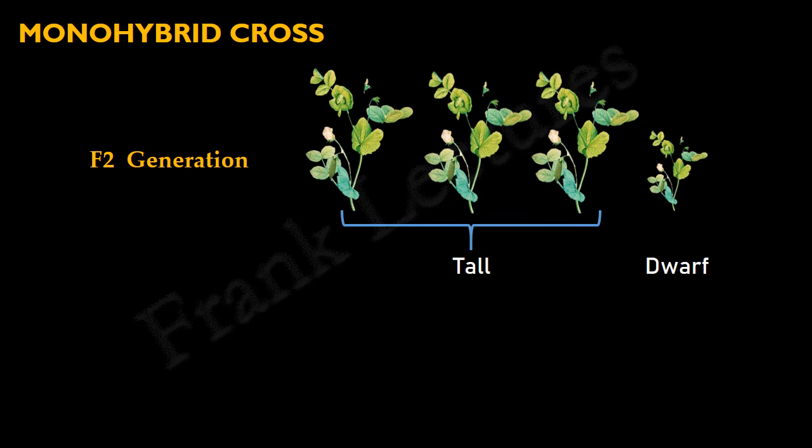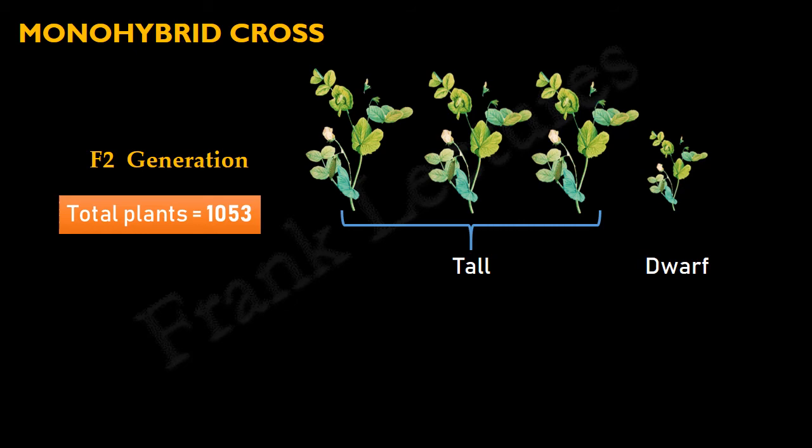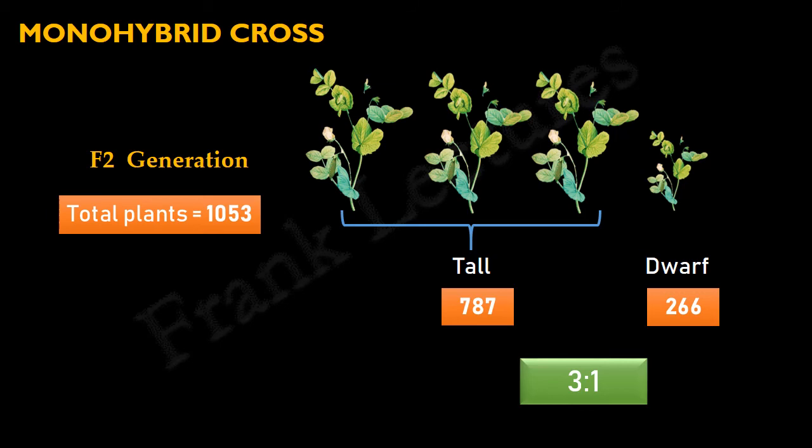Mendel also analyzed and noted that a total of 1053 plants were produced in the F2 generation. Out of these, 787 were tall and 266 were dwarf. When he calculated the ratio of tall to dwarf plants, it came out to nearly 3 to 1. Mendel performed monohybrid crosses for all seven pea characters, and all seven crosses between varieties with contrasting traits gave the same results.